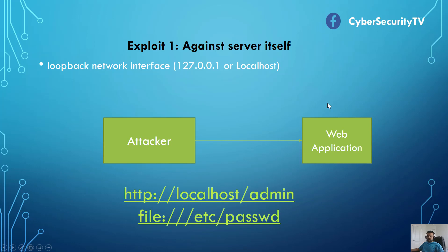Most developers don't check authentication or authorization of internal components because they assume any request coming from there is authorized. Another reason relates to disaster recovery scenarios — you may need someone to SSH into the host to access the admin module for backups, restores, or credential changes. Developers also often feel that since the admin module is within the trust boundary and externally inaccessible, they don't need to protect it, which is completely wrong. This is one way exploitation works.